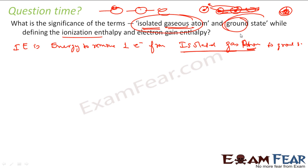Why the ground state? Because the ground state is the most stable state for atoms. When we talk about electron gain enthalpy or ionization energy, we refer to the ground state because that is the most stable reference state for atoms.